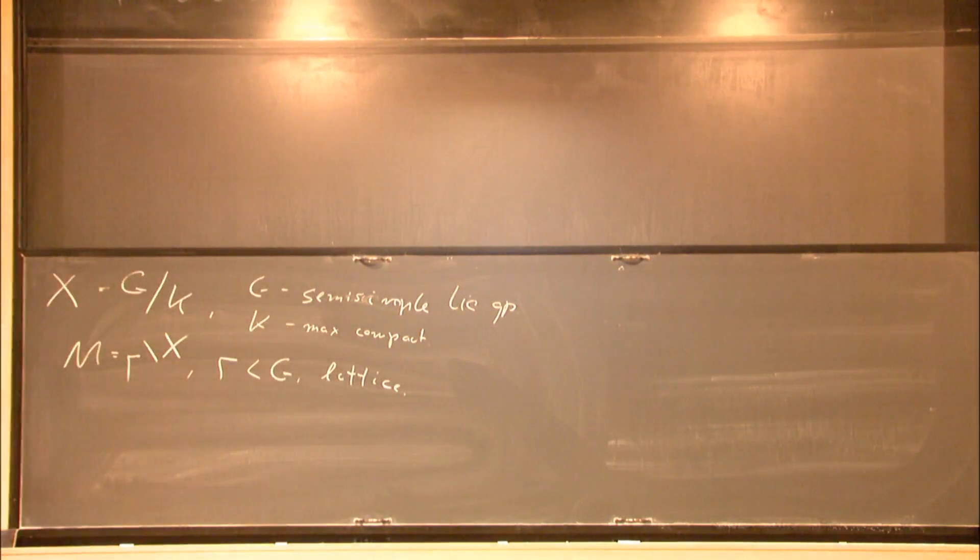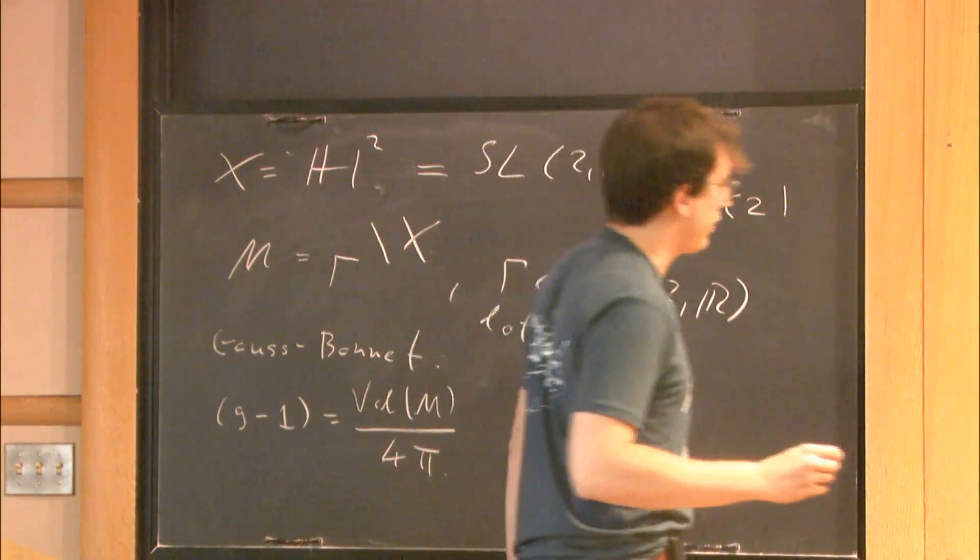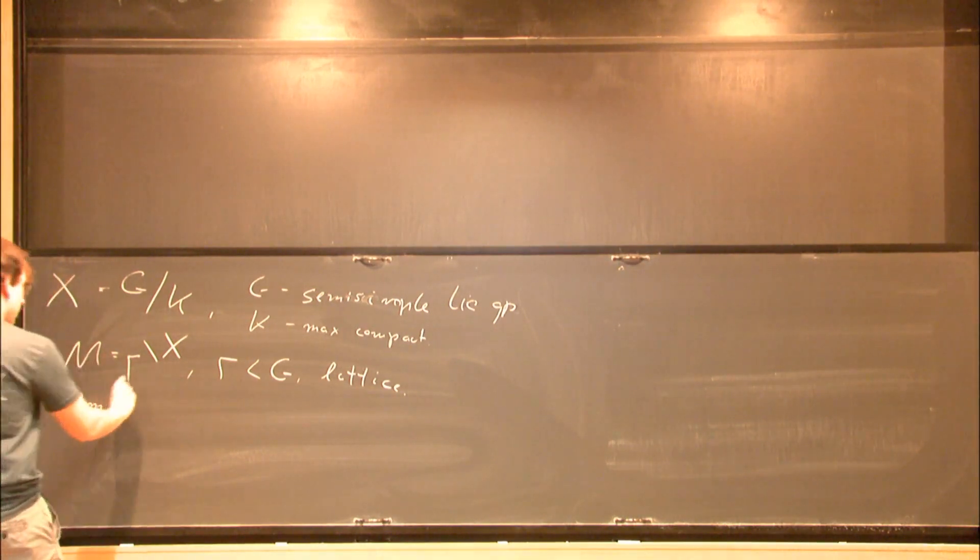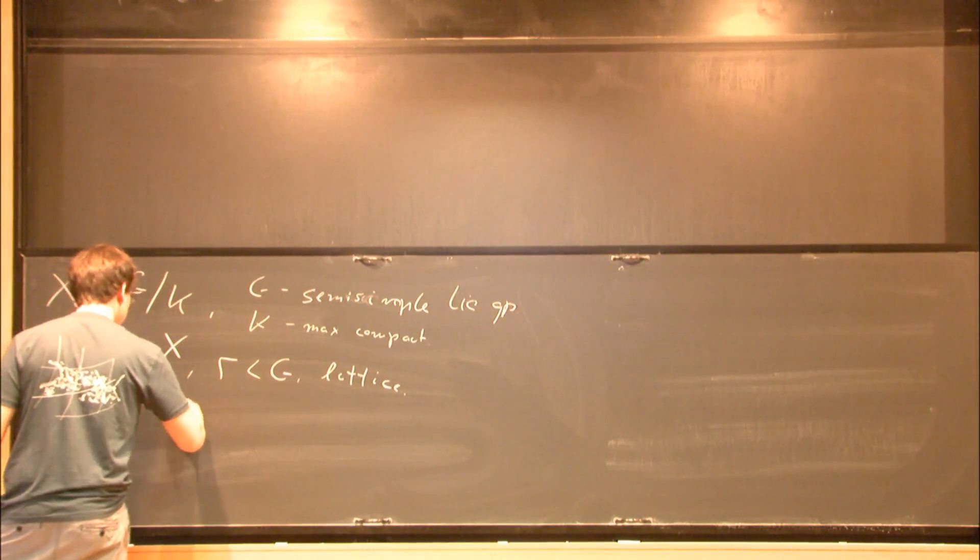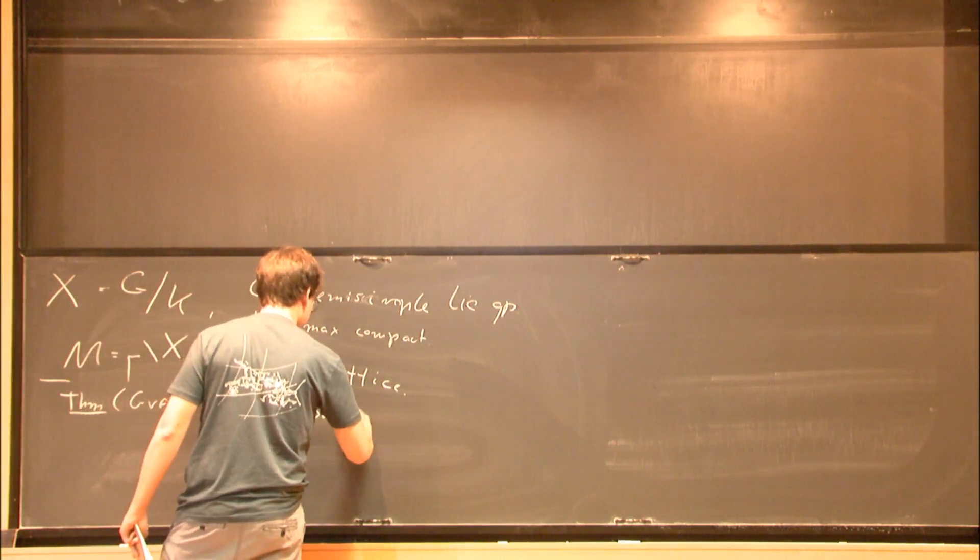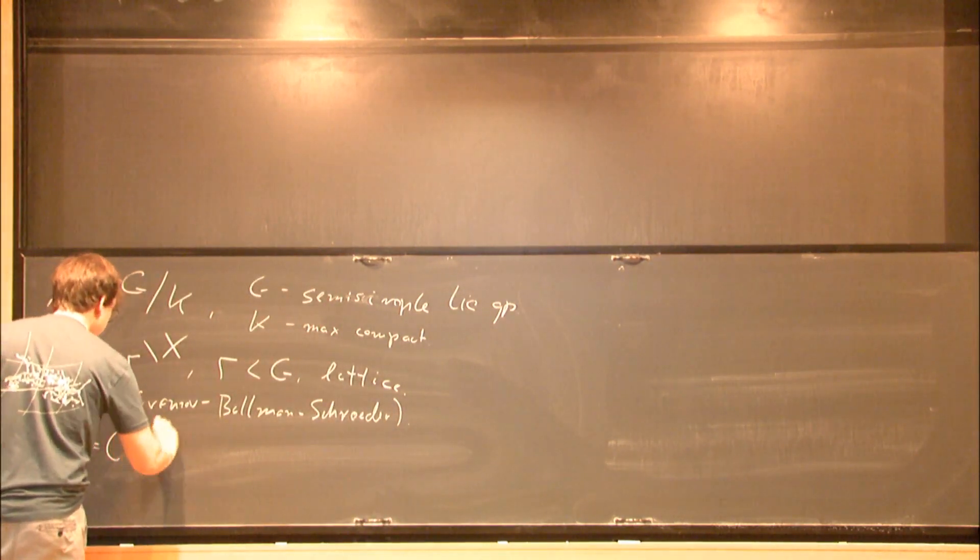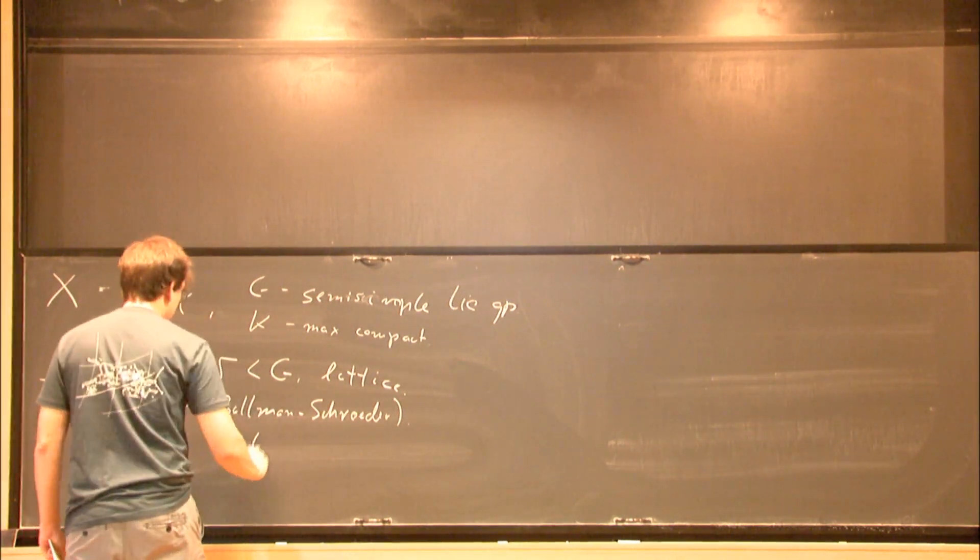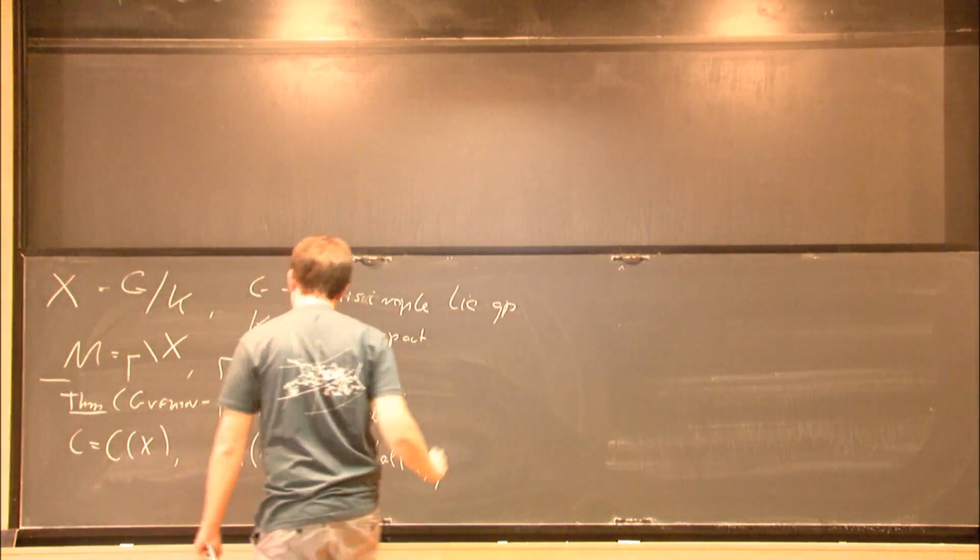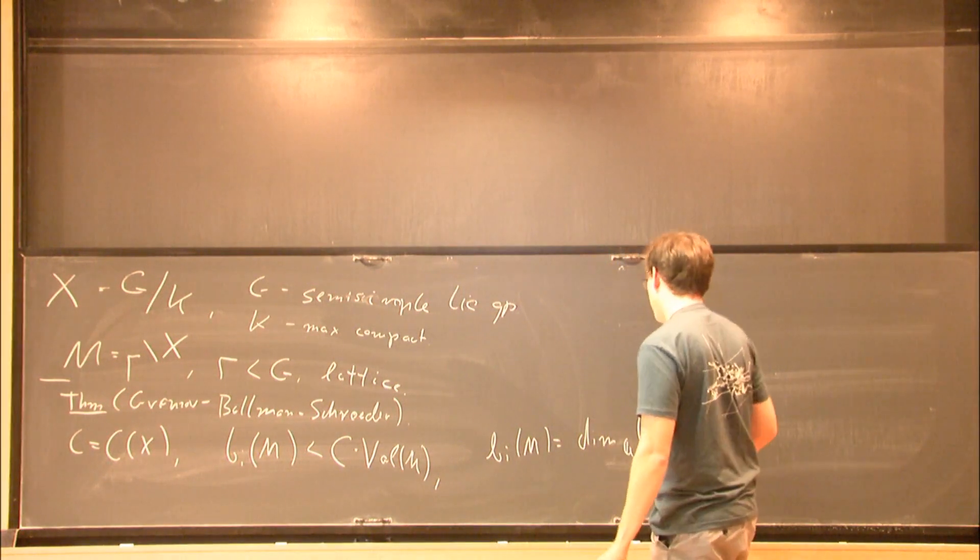Here we cannot expect such a nice formula. Nevertheless, it is still true that volume controls at least some topological invariants of M. So you have an old result of Gromov, Ballman, and Schroeder, which says that there exists a constant depending only on X, such that for every M like this, the Betti numbers of M are bounded by constant times the volume of M. I remind you that those Betti numbers are dimensions over Q of rational homology groups.